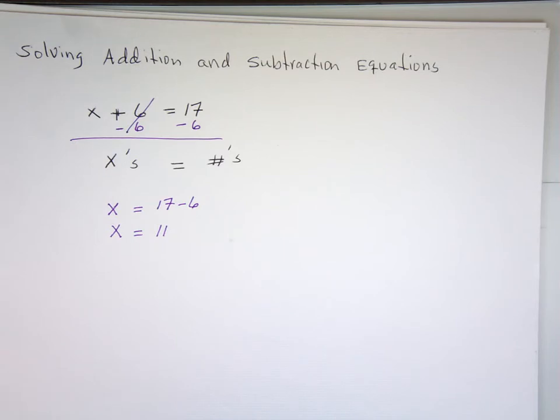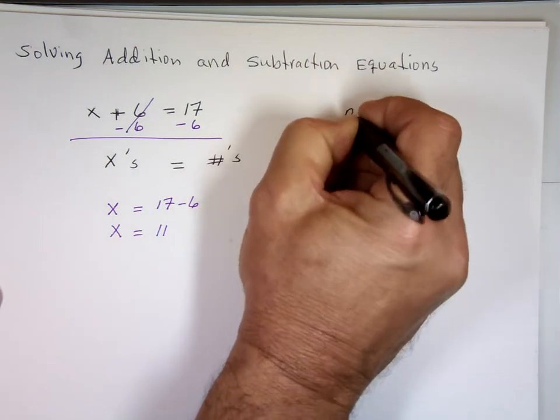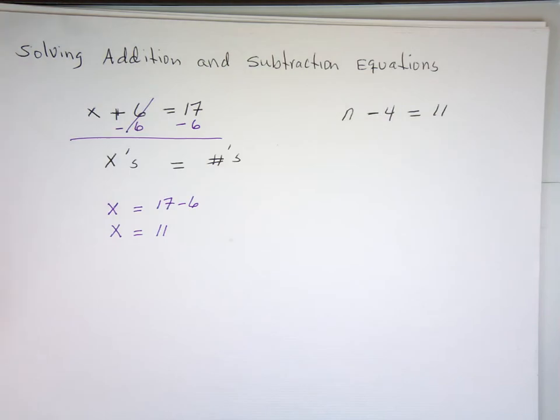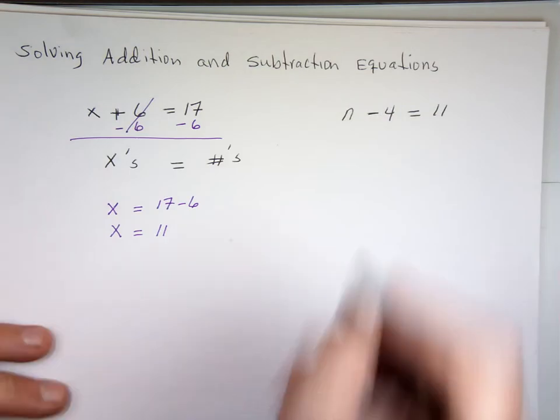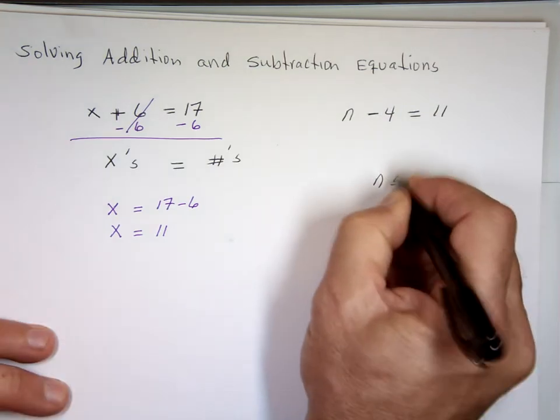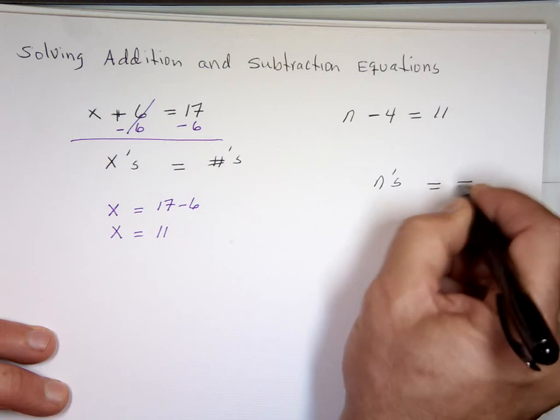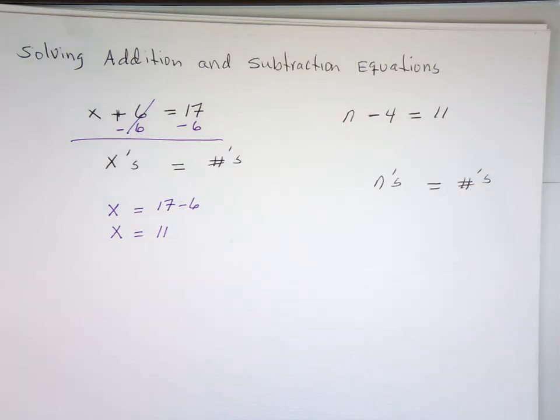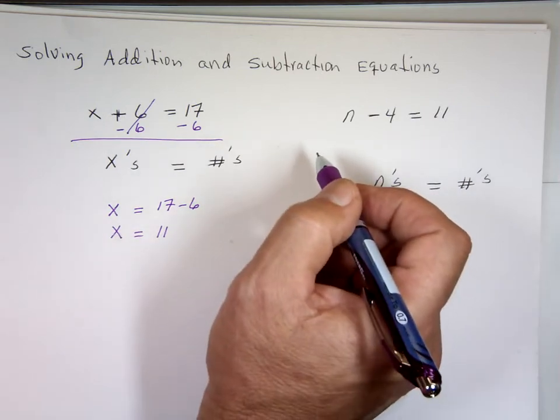Let me try another one. n minus 4 equals 11. Again, here I want all the n's on one side, all the numbers on the opposite side. And it doesn't matter which side again. Since you have a subtraction, what do you want to do?